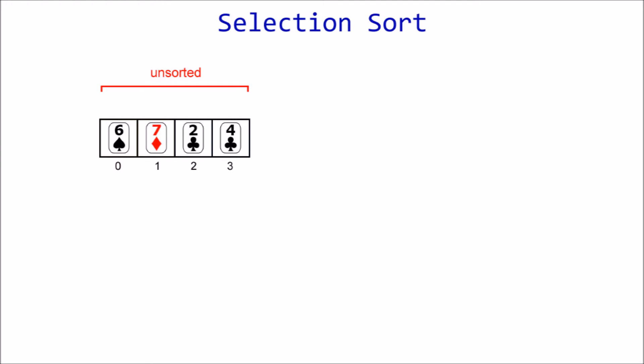We'll first step through this with some high-level pseudocode to get the concept down. The outer loop kicks things off by setting the current slot to index zero, because that's where the unsorted section begins.